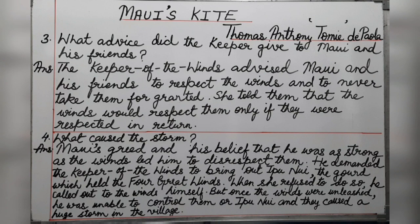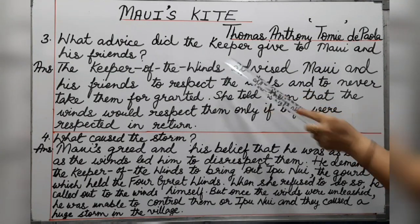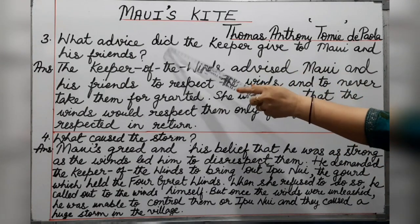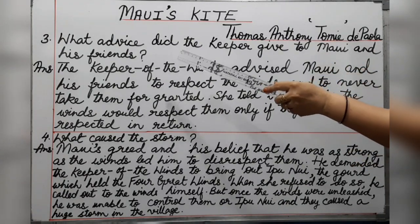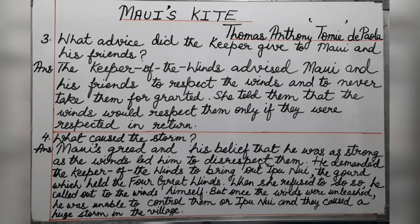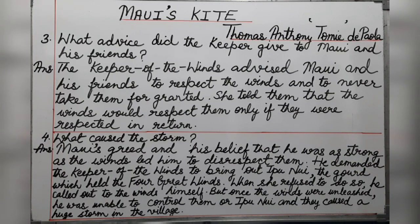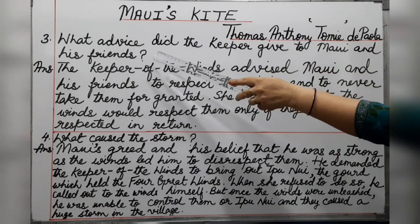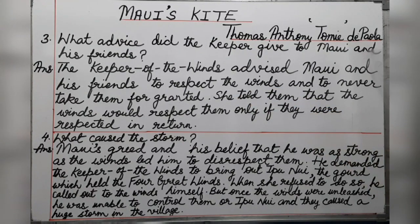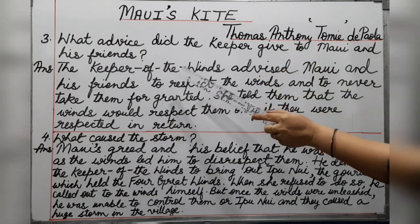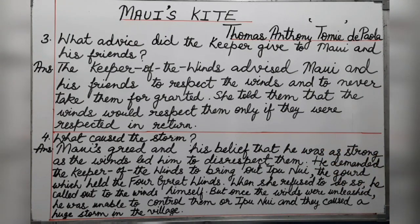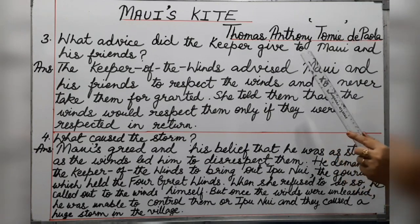Now, let's look at a small grammar point. Notice the two different spellings: 'advice' (A-D-V-I-C-E) is a noun, meaning a suggestion or salah dena. 'Advise' (A-D-V-I-S-E) is a verb. So don't get confused — in the question 'What advice did the keeper give?' the word advice is used as a noun, while in the answer 'The keeper of the winds advised Maui and his friends,' advised is used as a verb.